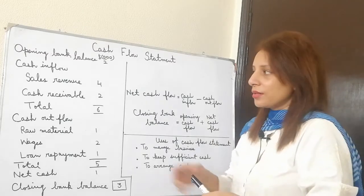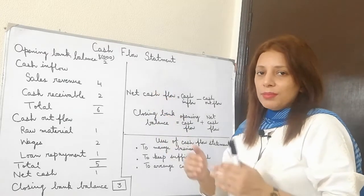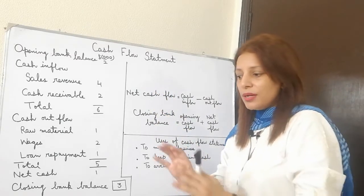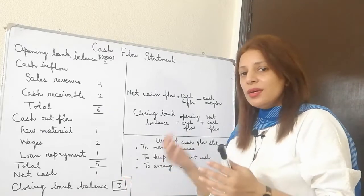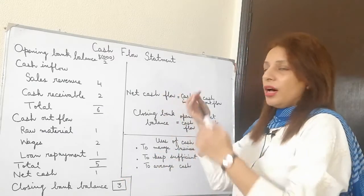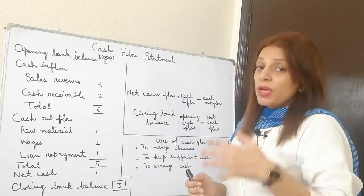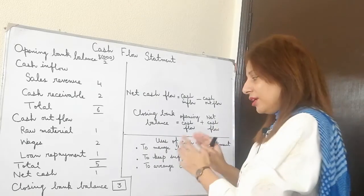For instance, if I have seen that in the month of March I am getting more cash, I can keep that cash aside to pay for any other expenses which I will have in April or May and I have to pay more money for that.